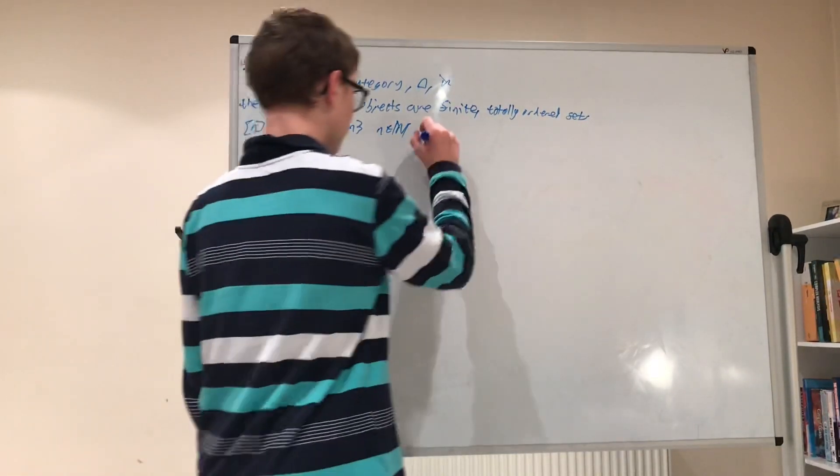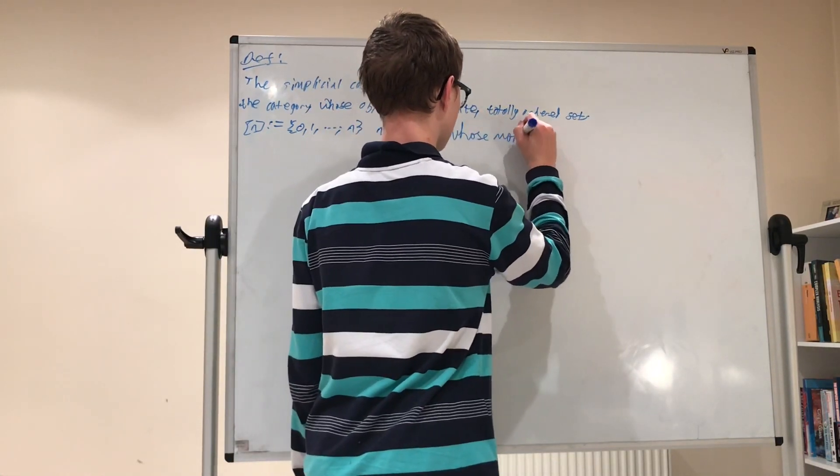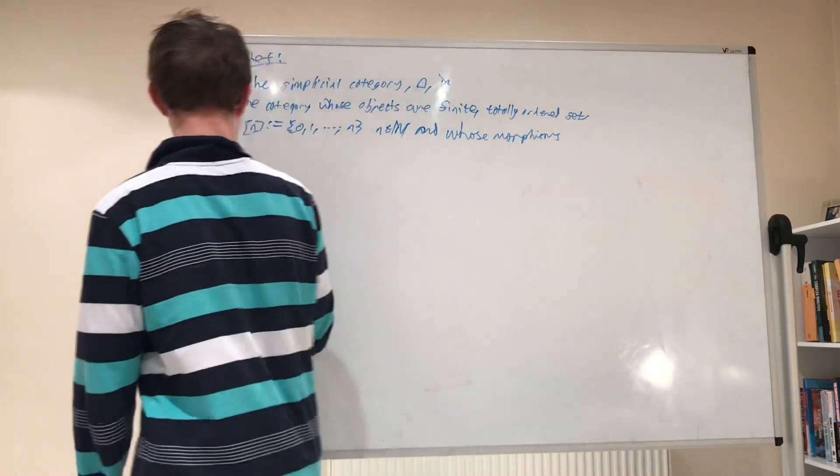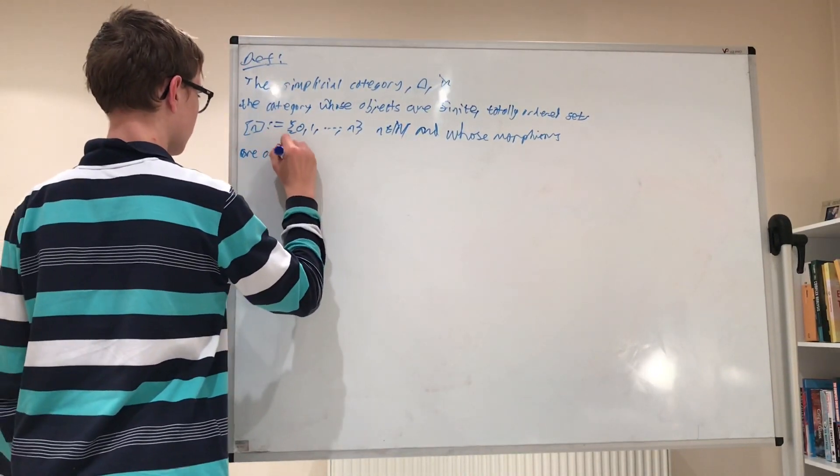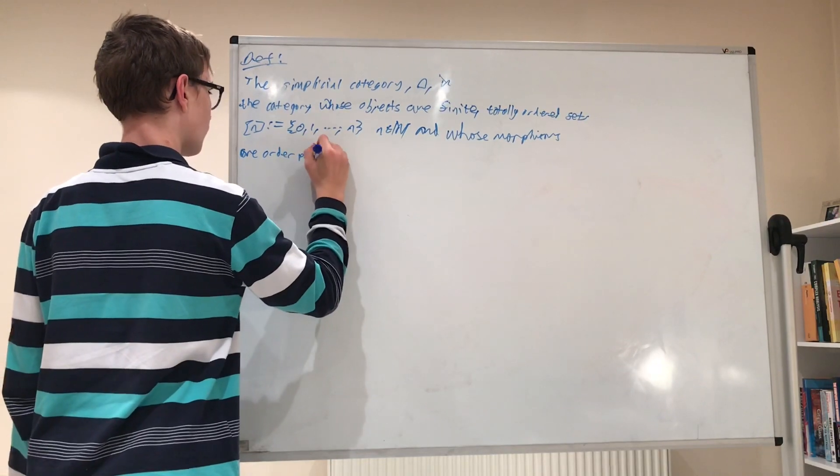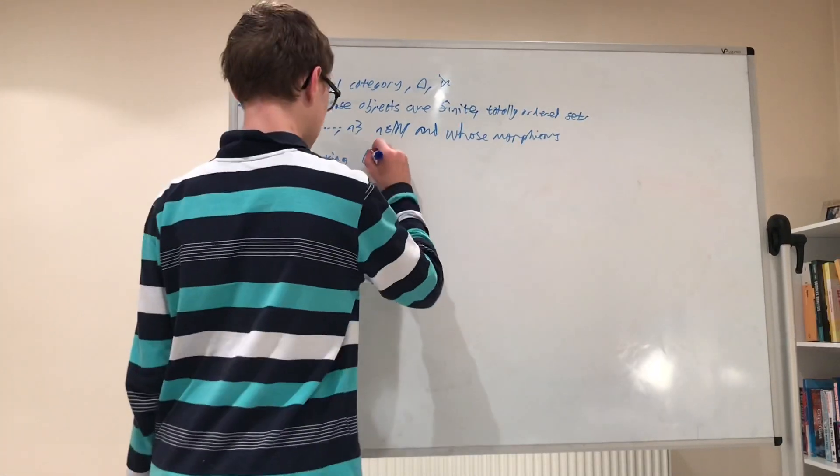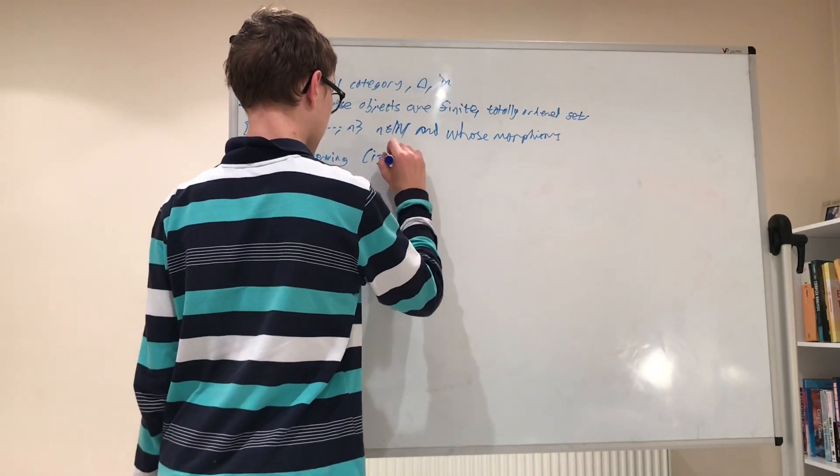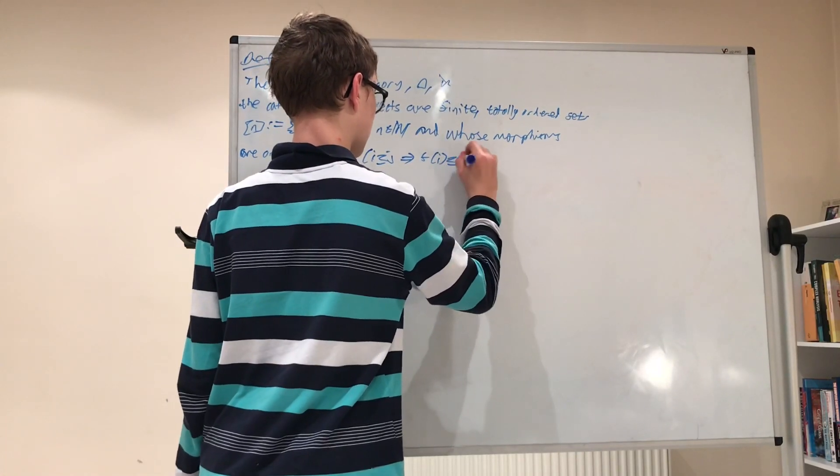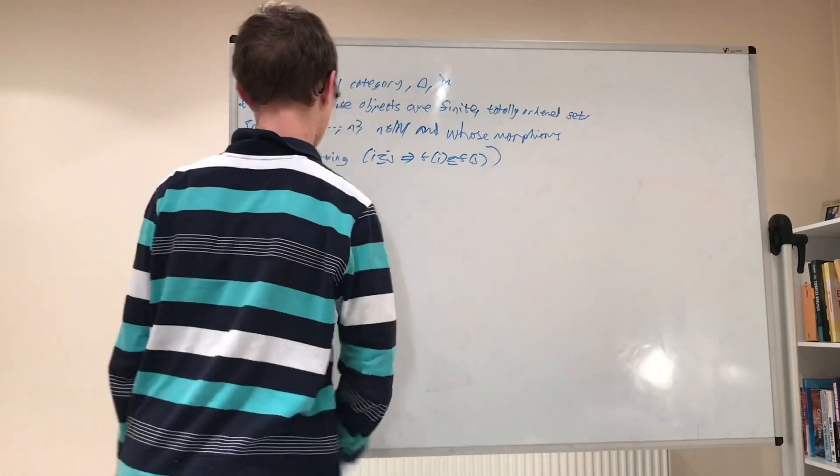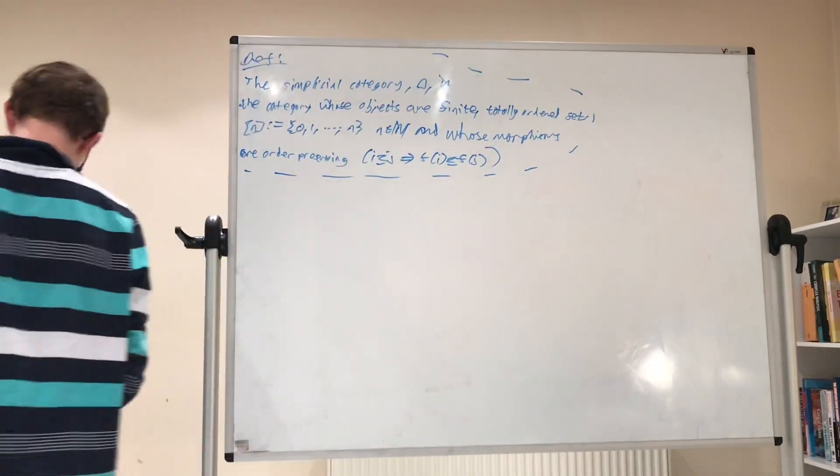And whose morphisms are order preserving. So what that means is if i is less than or equal to j, that implies that f of i is less than or equal to f of j. Alright, so that's how we define the simplicial category.